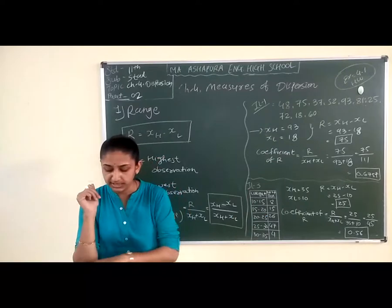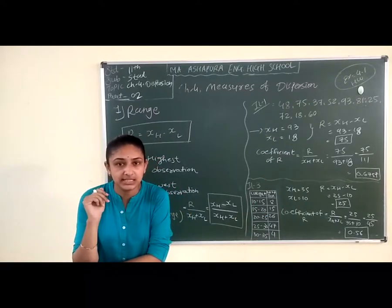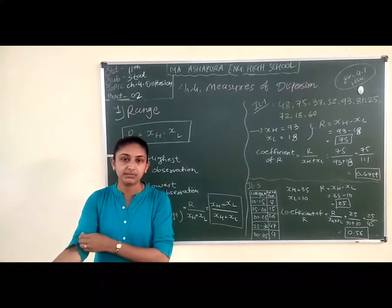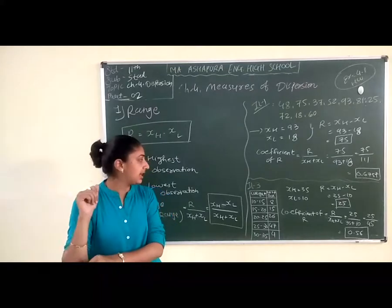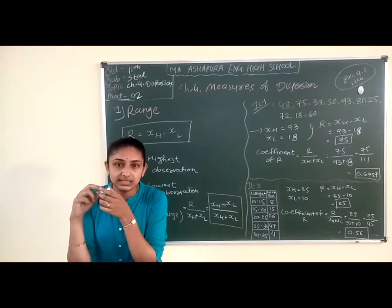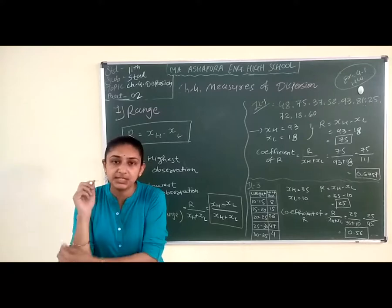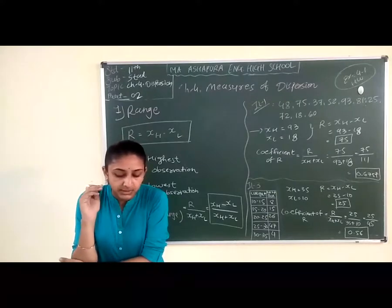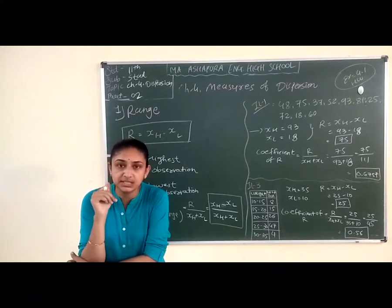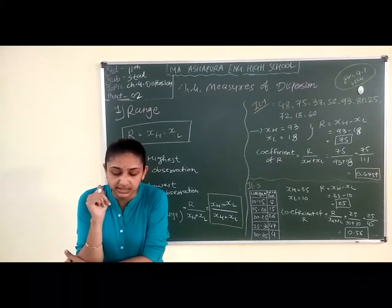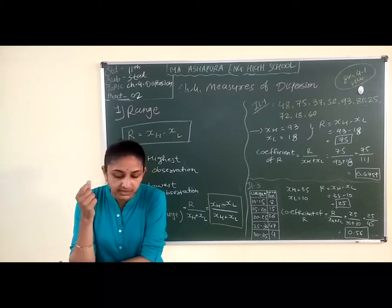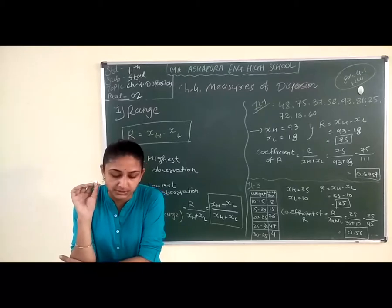To summarize the method: first, point out the highest value and the lowest value, then their difference is the value of R. After that, the coefficient of range is R divided by XH plus XL. Illustration 2 involves monthly salary data — in that case, consider the salary observations only and not the frequencies. The highest value is 12,000 and the lowest value is 3,500. Illustration 2 is homework.